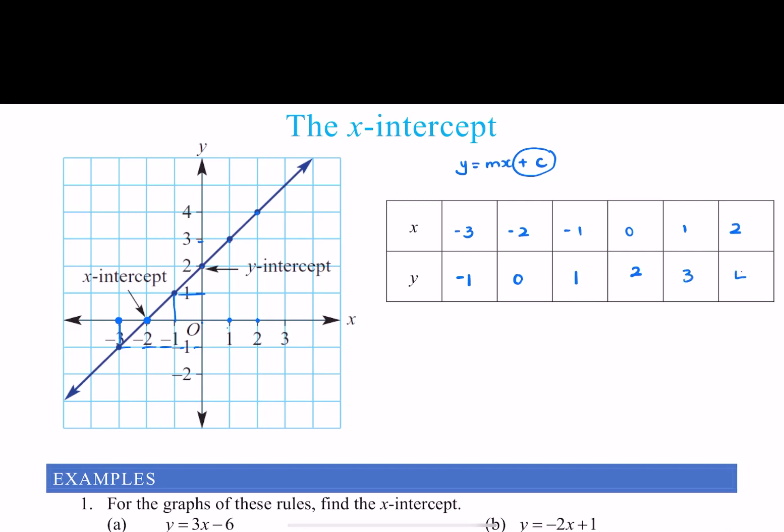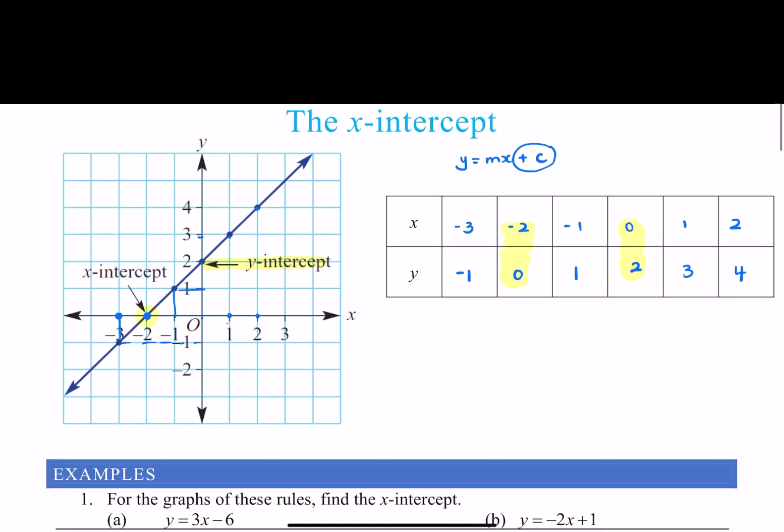Now we all can see on this line it's been noted where the y-intercept is, and we also know from our previous work that the y-intercept occurs when x is 0. And so I want you to take note of here is my x-intercept. It's where it's cutting the x-axis, and that occurs when y is 0. So I've got (-2, 0), so when y is 0 we have our x-intercept.